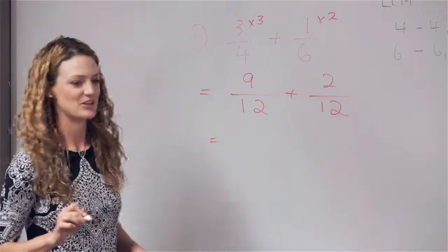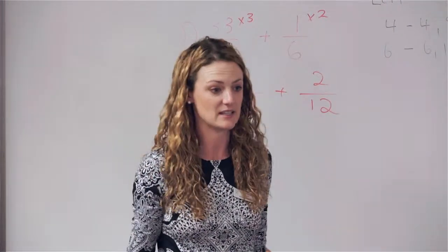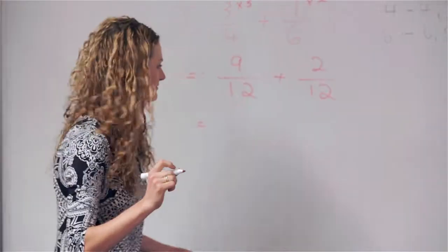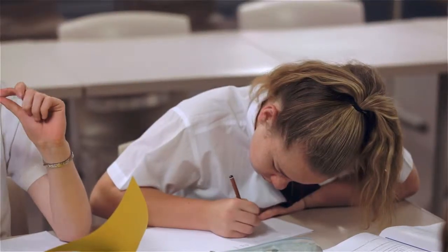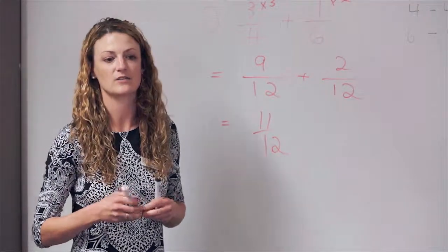So 9 over 12 plus 2 over 12. Can we now add them together? Yes, because we have the same denominator. Gemma, your answer? 11 over 12. 11 over 12, excellent. But can I simplify that anymore? No. We never leave a fraction that is not simplified.